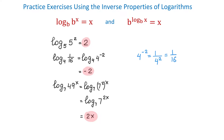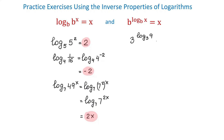Now let's evaluate a few logarithms using the second property. In the first example, we will evaluate 3 to the power of log base 3 of 9. According to the property, if this base is the same as this base, then the result will be equal to 9. And indeed, if we evaluate this logarithm — 3 to what power is equal to 9? That would be 2. So the value of this logarithm is 2, and 3 to the second power equals 9.